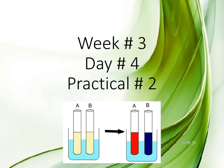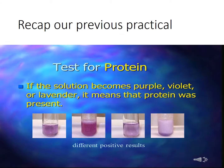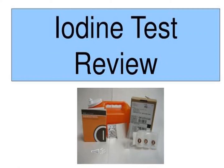Let's recap our previous practical. To test for protein we use the biuret reagent, which gives a purple, violet, or lavender color — it means that protein was present. Today we are going to perform a practical to test enzyme action by putting diastase in a starch solution and performing the iodine test for the presence of starch.